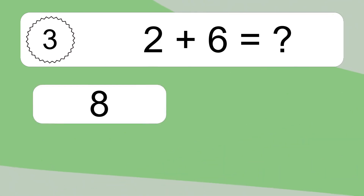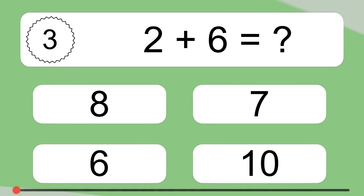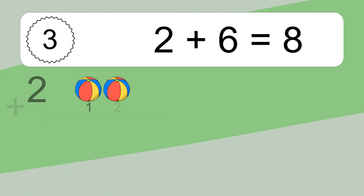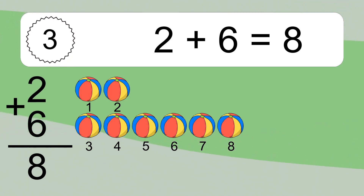2 plus 6 equals what? 2 plus 6 equals 8. Let's count it. 1, 2, 3, 4, 5, 6, 7, 8.